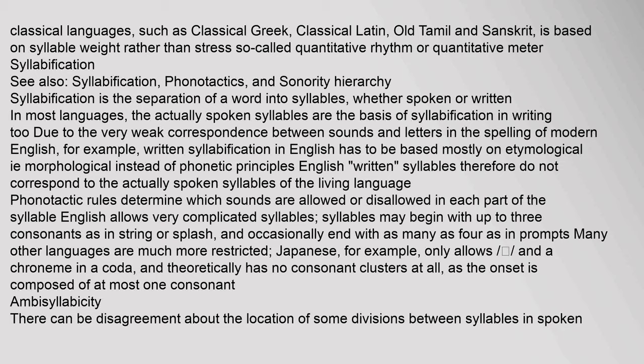Japanese, for example, only allows a nasal or a chroneme in a coda, and theoretically has no consonant clusters at all, as the onset is composed of at most one consonant.